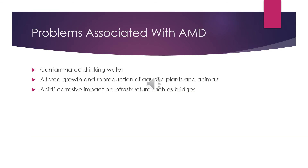In this slide we're going to be talking about problems associated with acid mine drainage, which include contaminated drinking water, altered growth and reproduction of aquatic plants and animals, and the acid corrosive impact on infrastructure such as bridges.